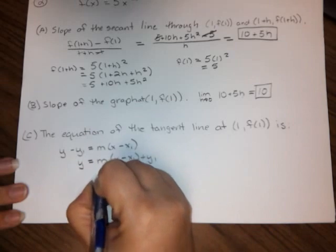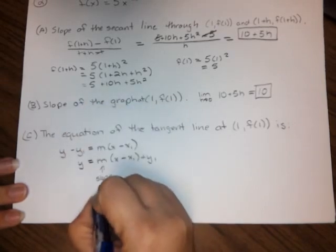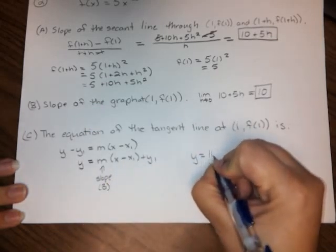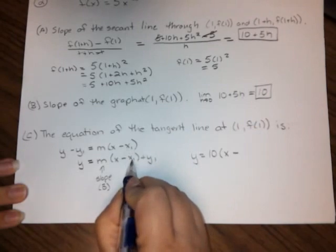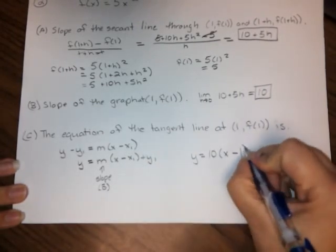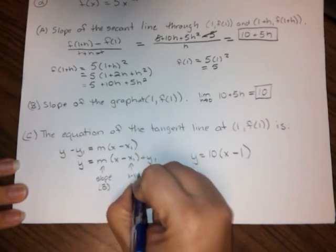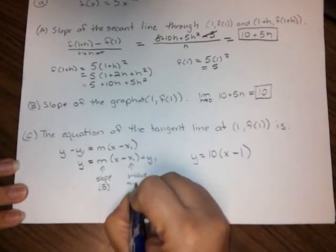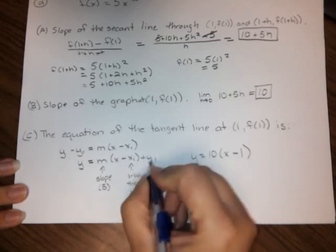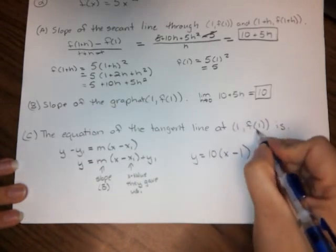So now we just need to fill in the blanks. So this part is the slope, and that we found in part b. That was part b. So y equals 10 times (x minus x1). Well, that's just the x value here, so it's going to be x minus 1. So this was just the x value they gave us. And this y1 is the y value they gave us, so this is going to be plus f of 1.